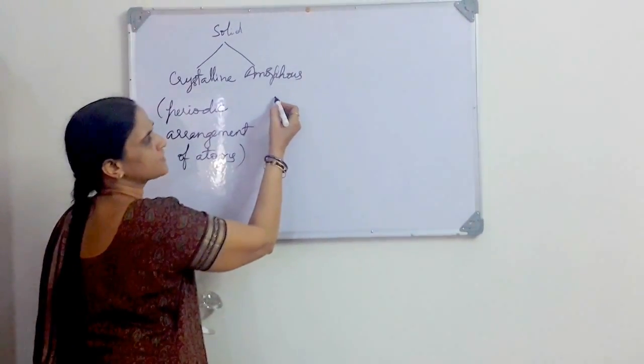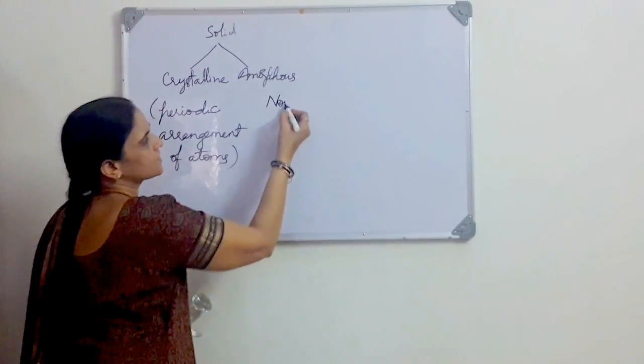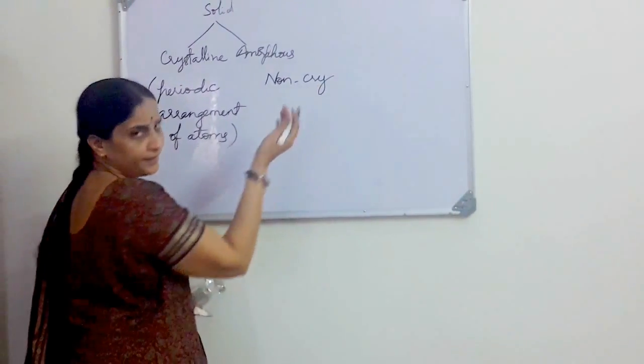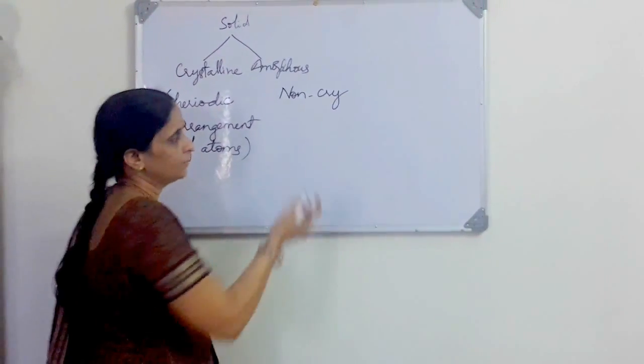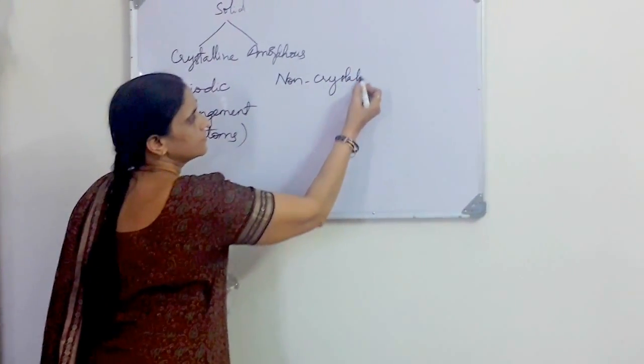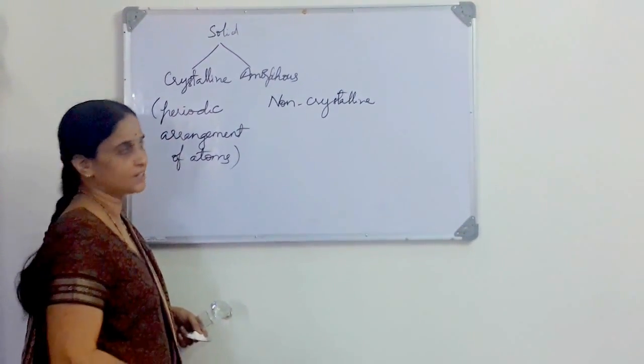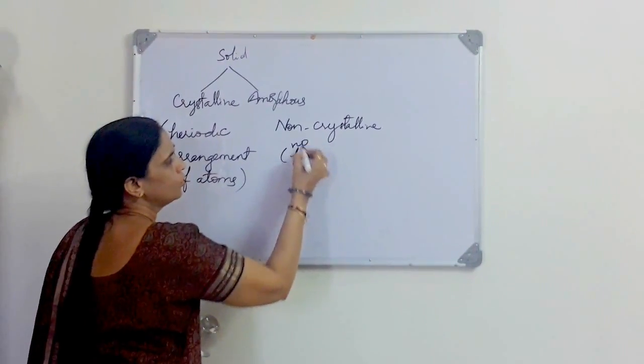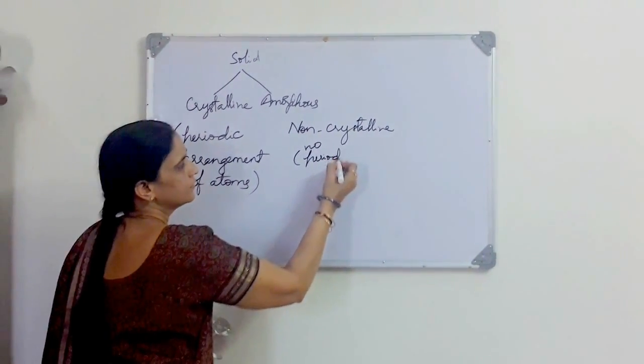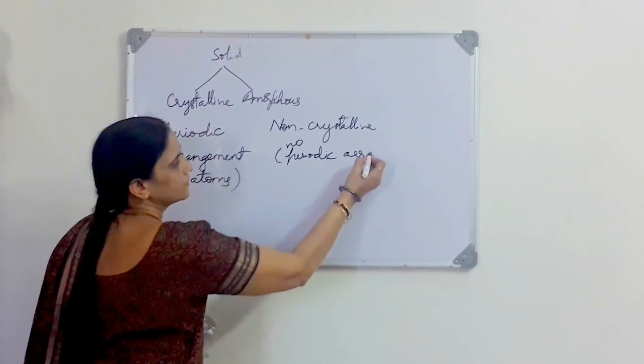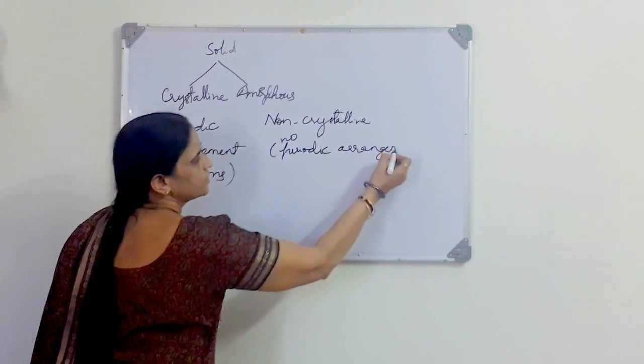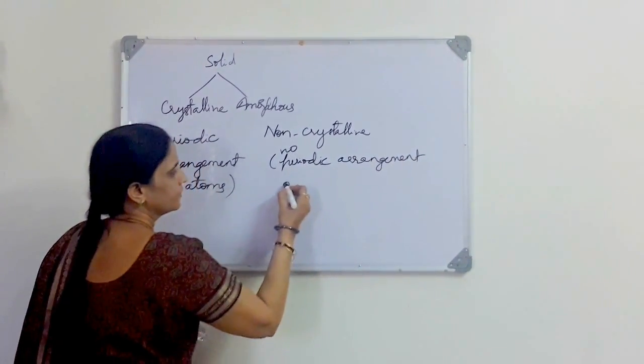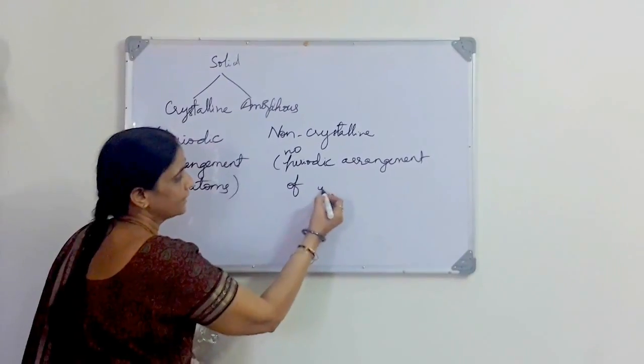And amorphous is non-crystalline, the negation of crystalline. In this non-crystalline, it doesn't have any periodic arrangement of atoms.